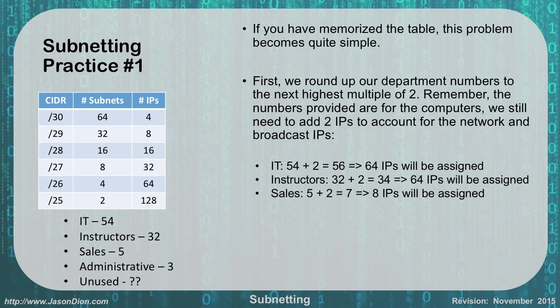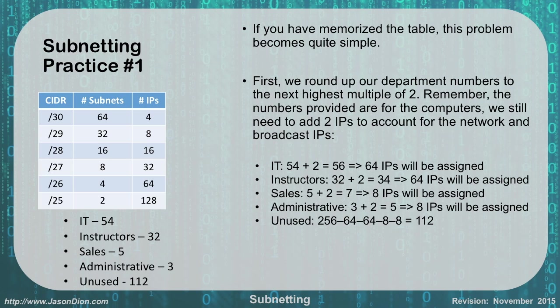For administrative, 3 plus 2 gives us 5, rounding up to 8. So sales and admin will both share the same number in their CIDR notation, but they will be separate subnets. For the unused portion, we add up all the previously used IPs: 64 plus 64 plus 8 plus 8, giving us 144. We then subtract that from the 256 we started with, leaving us 112.